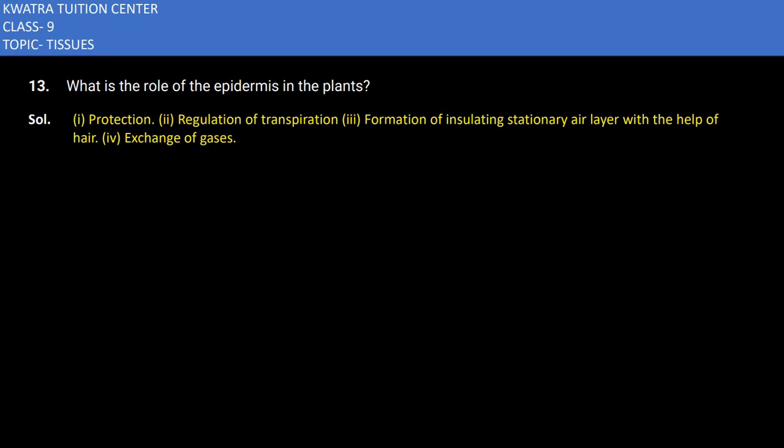Here in this one we are starting with the 13th part. What is the role of epidermis in plants? The epidermis is the outer covering of the plant, which is a parenchyma tissue that acts as epidermis.